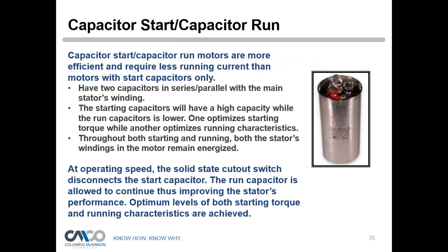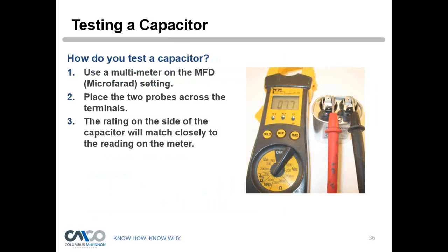The capacitor charges up and dissipates energy to the motor to create a phase shift for the start winding. It is measured in microfarads. Some motors also have a run capacitor in addition to the start capacitor — typically for higher-horsepower motors that need additional current not just for starting but to keep running. So some of our higher-horsepower units have both a start capacitor and a run capacitor.